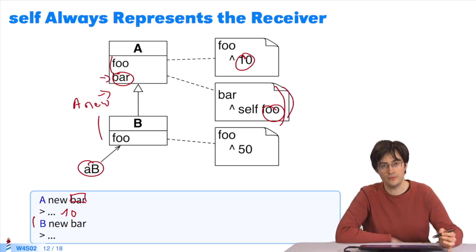At that point, the message foo is sent to self, which is a b. Thus, b new. We send the message foo, so the algorithm looks for the method in the object class. It finds it. 50 is returned. This is how the algorithm unfolds.